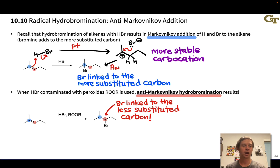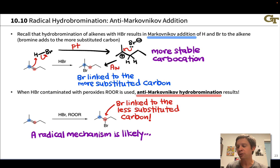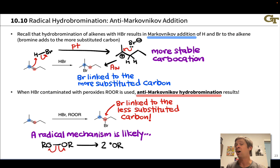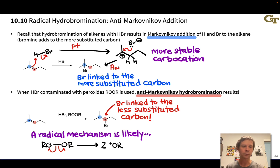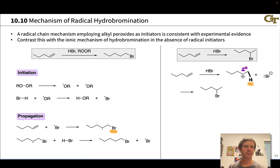By introducing radicals, we can cause a regiochemical switch. We can get one bromide or the other depending on whether we exclude or include radicals under the reaction conditions. A radical mechanism is likely because the peroxide contains a weak O-O bond, and other radical initiators cause similar reactivity. A radical mechanism explains this regioselectivity — why the bromine ends up linked to the less substituted position.